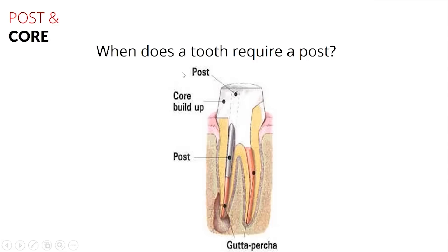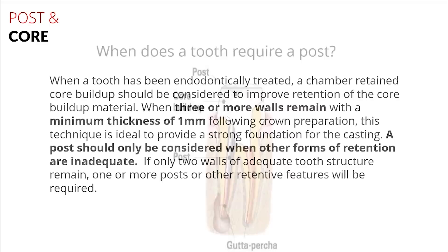So the question is: can we build up that tooth sufficiently for a crown to sit on? If we were to look into this question of when does a tooth require a post, we can answer that by looking at what the crown and the forces that crown would be subjected to are in relation to our core buildup. If we look at a tooth and it doesn't have a lot of its natural tooth structure to help hold the core buildup together, then you would need a post.